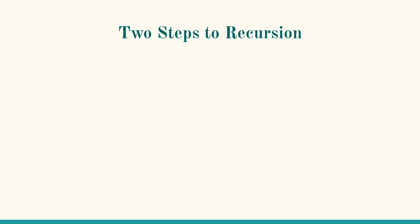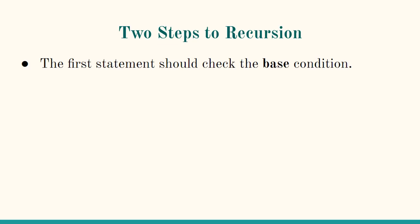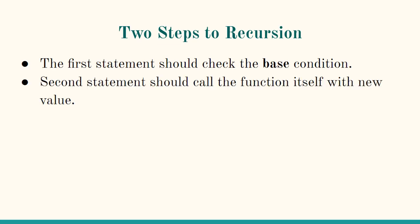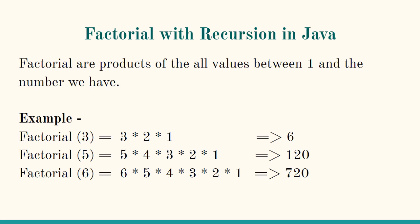There are basically only two steps to recursion. If you understand these two steps you can use them to implement any other problem solving as well. The first step is you should check the base condition. If the base condition is fulfilled the function will return back with a particular value, else the second statement will call the function itself with a new value. First step: check the base condition and if true, exit the recursion. If false, the function calls itself with a new value.